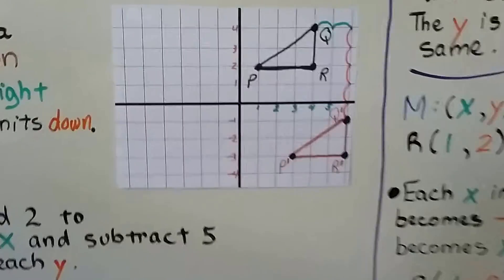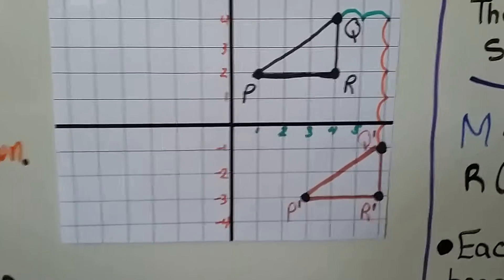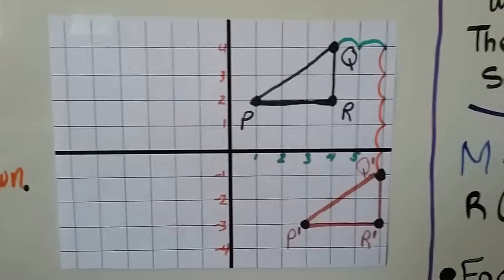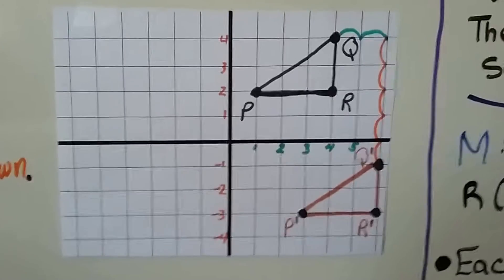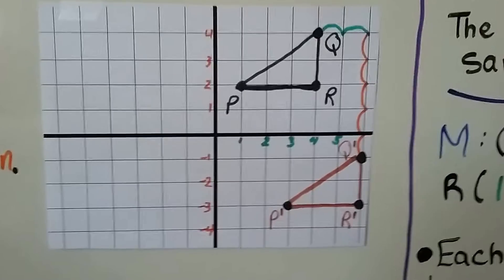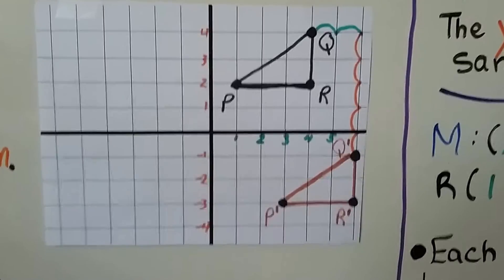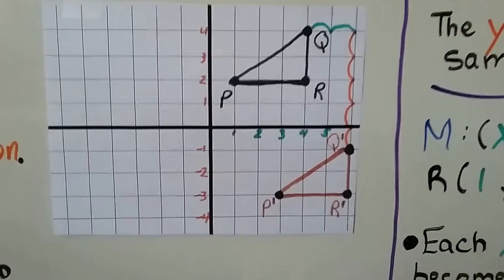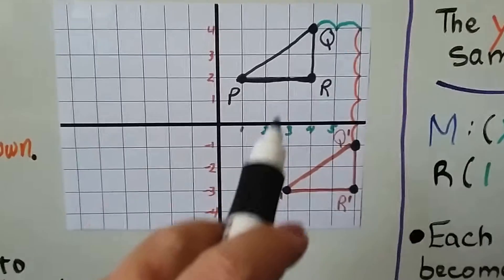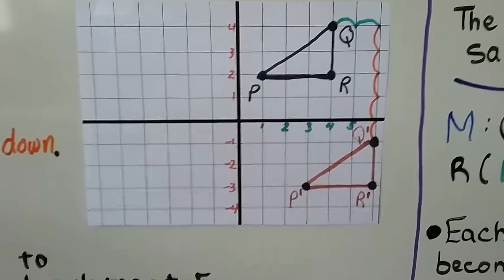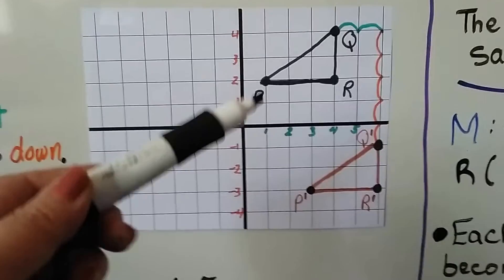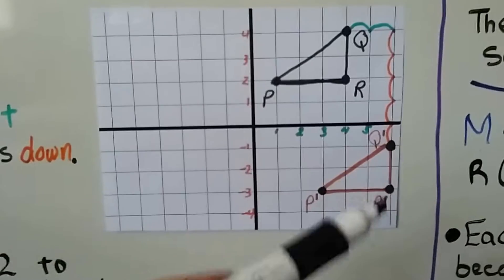We're going to end up moving our triangle from the first quadrant to the fourth quadrant. We're going to move it over 2 to the right and down 5, and this will be our image. Here's the preimage that we started with, the original, and here's our image that it became. We slid it down, so it translated, it slid to that spot.